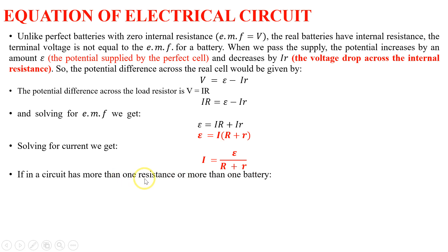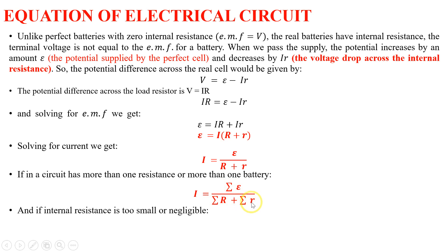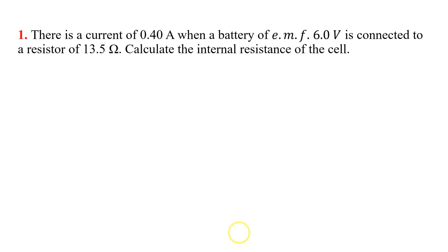If a circuit has more than one resistance or more than one battery, the current equation is: I = (sum of all EMFs) / (sum of all resistances + sum of all internal resistances). If the internal resistance is very small or negligible, the current simplifies to: I = (sum of all EMFs) / (sum of all resistances).